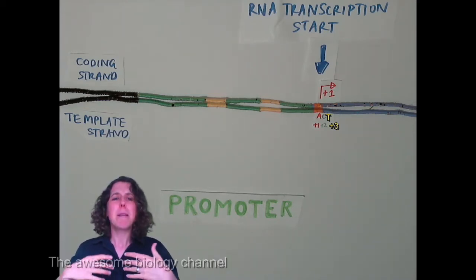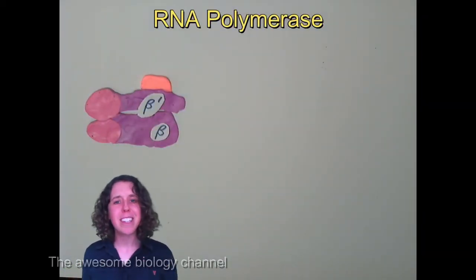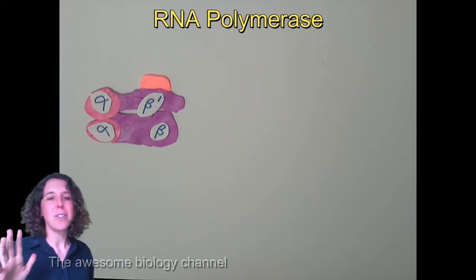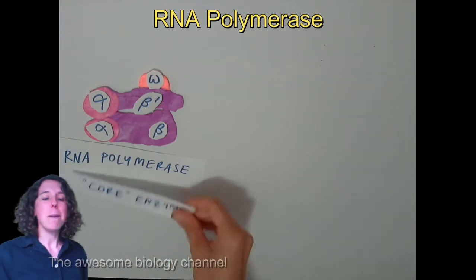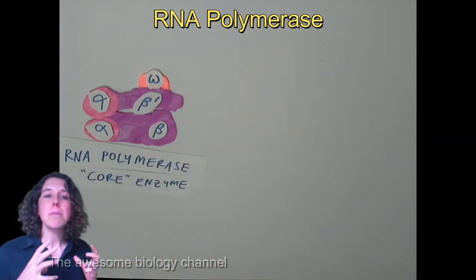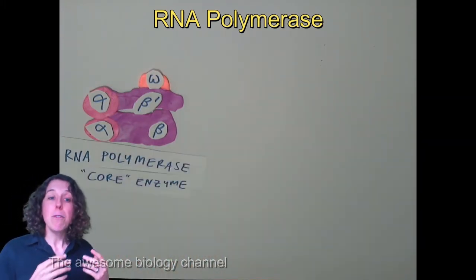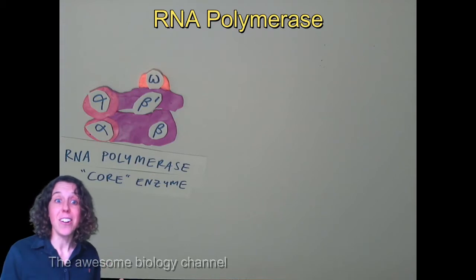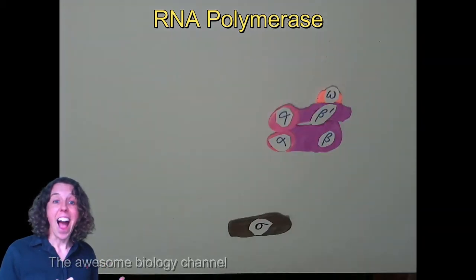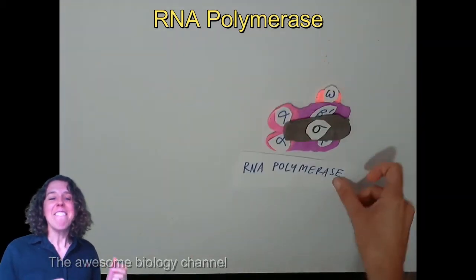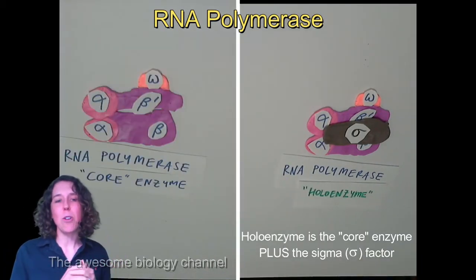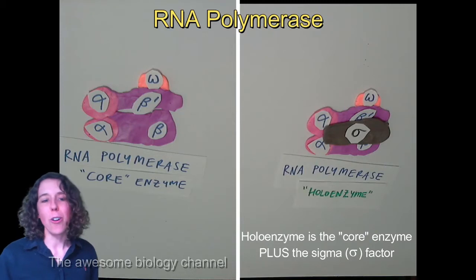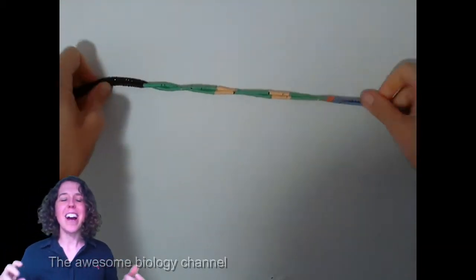Now if we have a look at the beast who's going to be doing the work, the RNA polymerase, we've got five subunits to this bad boy: two betas, two alphas, and an omega. Together they make up the core enzyme, but if we added a sixth subunit onto this, then together this sigma factor plus the core enzyme makes the holoenzyme, and he's going to be doing some of the work at the start.